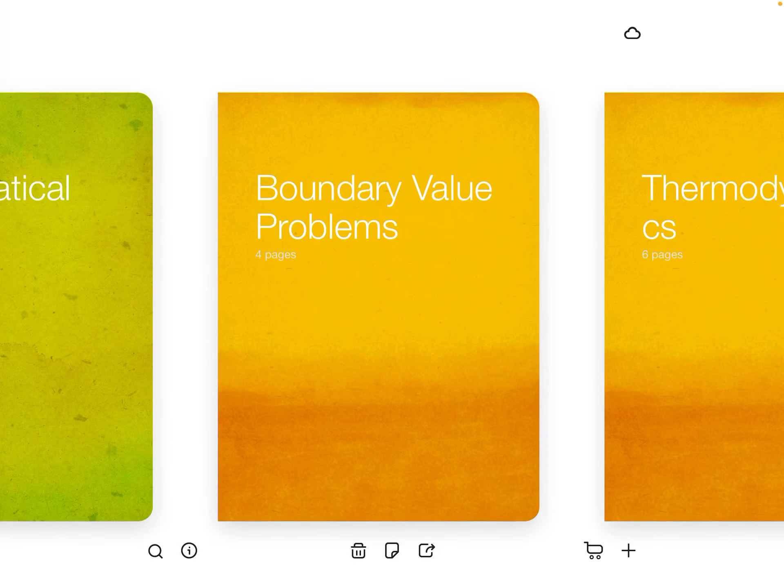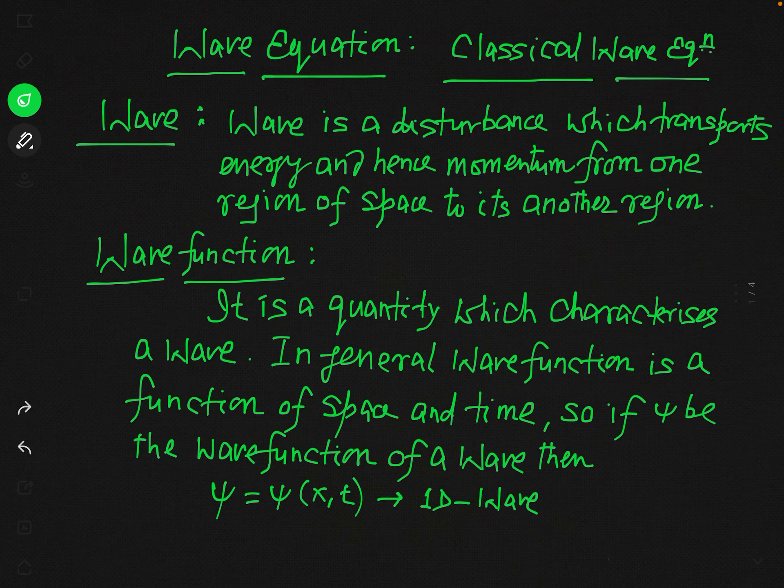After a detailed analysis of the Laplace equation and Poisson equation, we are now going to discuss a very important problem in boundary value problems: the wave equation. A wave is a disturbance which transports energy and momentum from one region of space to another. Whenever we consider wave motion, there is transport of energy and consequently transport of momentum.